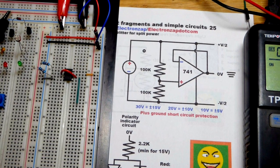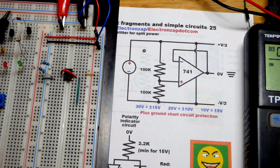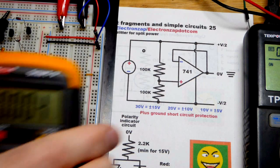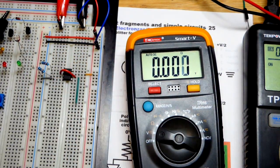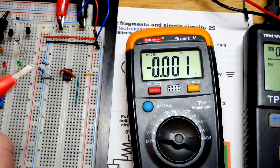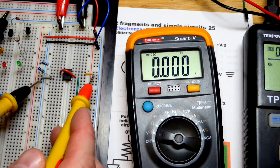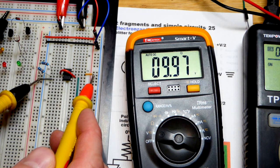We will grab the multimeter and just take a quick look. The point of this is ground is basically halfway between the supply voltage. That's what a split supply means.